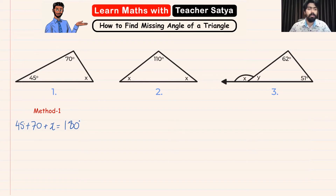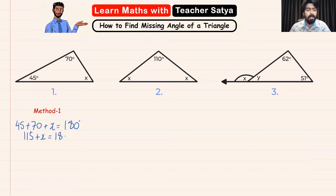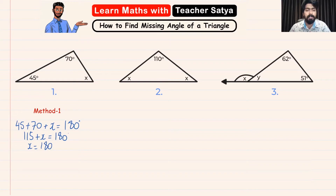Now 45 plus 70 is going to give us 115. So 115 plus x is equal to 180 degrees. Now in order to find the value of angle x, I'm going to transpose 115 to the other side. So x will be equal to 180 minus 115, and therefore x is equal to 65 degrees.